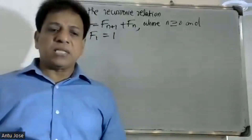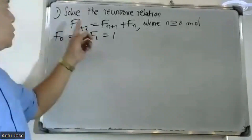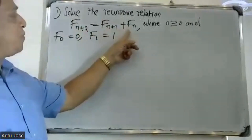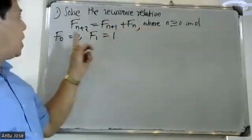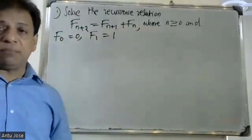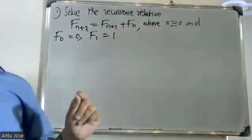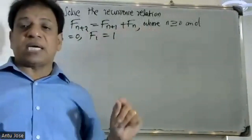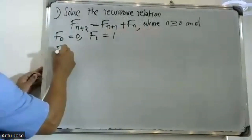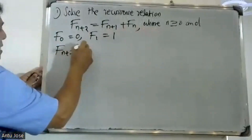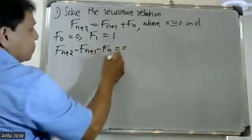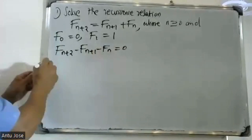Good morning students. The question is the second order linear recurrence relation — homogeneous second order linear recurrence relation: f(n+2) minus f(n+1) minus f(n) is equal to 0. Write the characteristic equation.